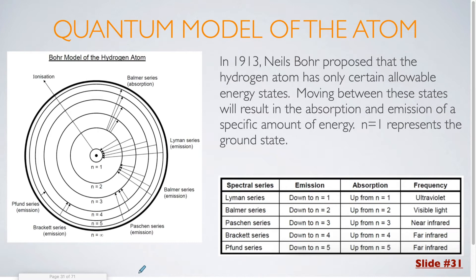In 1913, Niels Bohr proposed that the hydrogen atom has only certain allowable energy states. Moving between these states will result in the absorption and emission of a specific amount of energy. N equals 1 represents the ground state. We can see here this is the orbit that the electron would typically follow within the ground state, and then each ring going out from there would be a higher energy orbital.